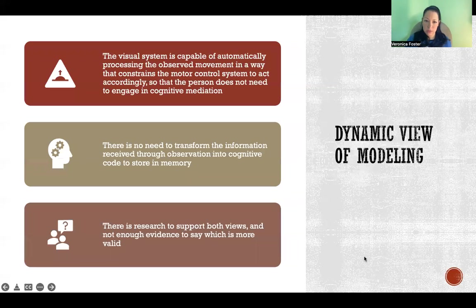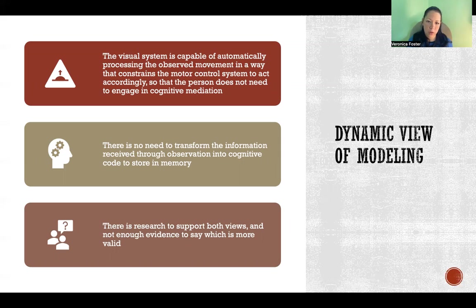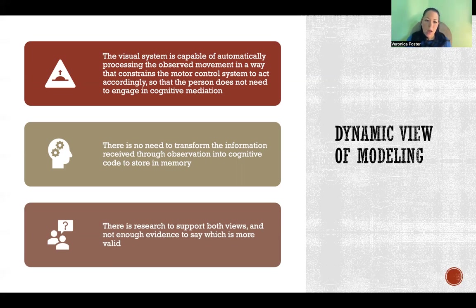Another way to look at this is from a dynamic view of modeling. It's very similar to cognitive mediation theory, but under this model the visual system is capable of automatically processing the observed movement in a way that constrains the motor control system — so we don't need to actually engage cognitive mediation. The idea is that we do it so automatically that there's no need to transform the information into a cognitive code to store in memory. There is research that supports both theories, and there isn't enough evidence to say definitively which one is correct — it might be a combination of both, or it might depend on the skill or the individual.